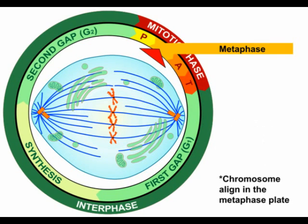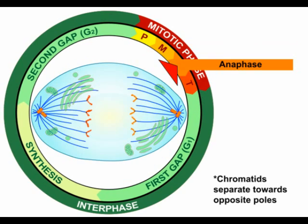During metaphase, the centromeres of chromosomes are now in alignment at the center of the cell. When viewed with a light microscope, the chromosomes appear to be in a circle that encompasses the circumference of the cell. An imaginary plane that is perpendicular and passes through this cell circle is called the metaphase plate, and it indicates the future axis of cell division. Many non-attached spindle fibers, called polar spindle fibers, are apparent in metaphase, and some of these fibers reach beyond the metaphase plate and overlap.